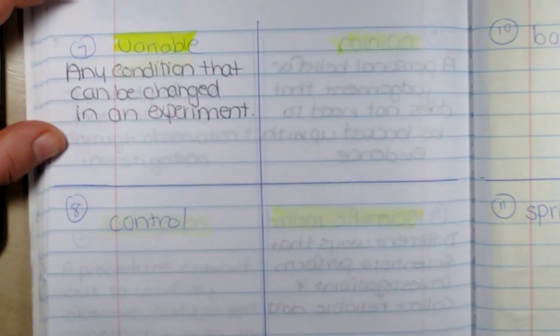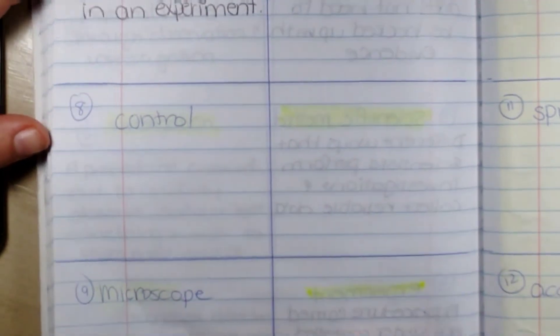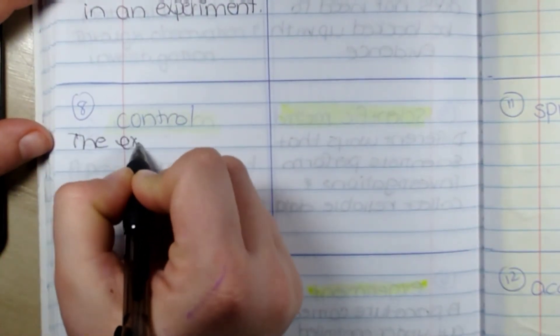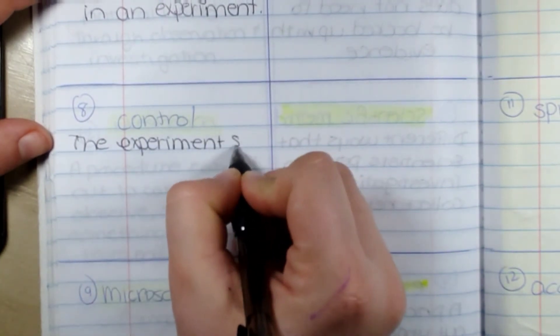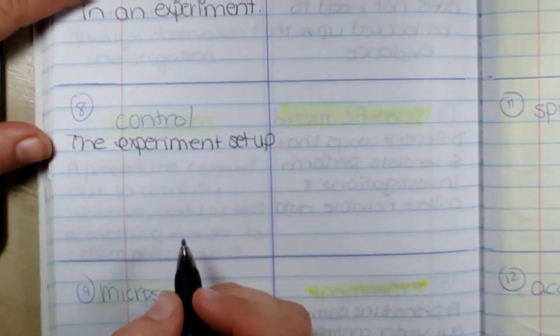And our last one for this lesson is a control, which is the experiment setup which you will compare all other setups.